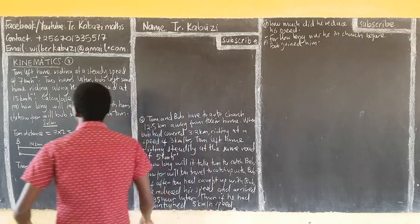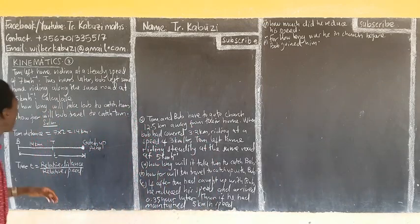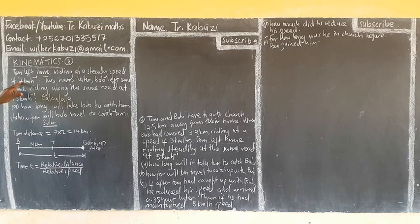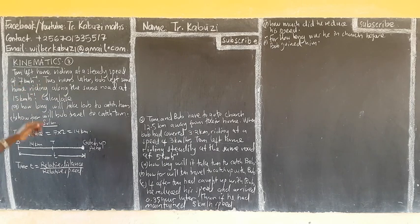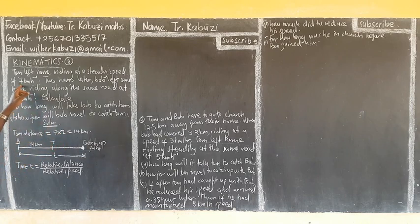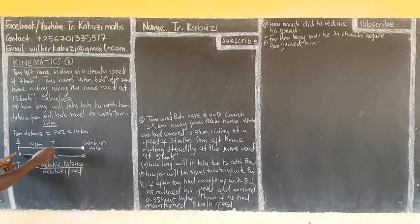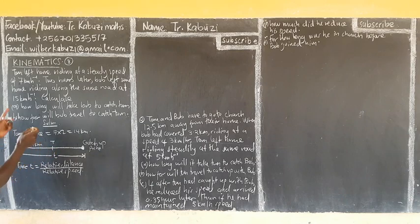So here there are two different aspects. After two hours, if Tom is covering the distance at 7 km per hour, after two hours that distance is going to be speed times time, which is 14 km. So the distance between Tom and Bob is 14 km.